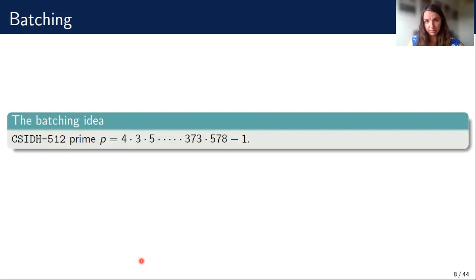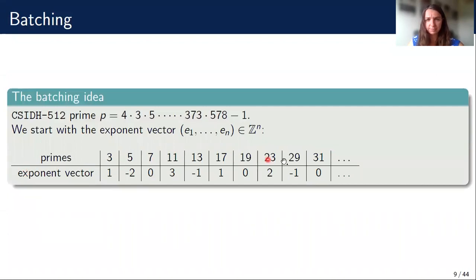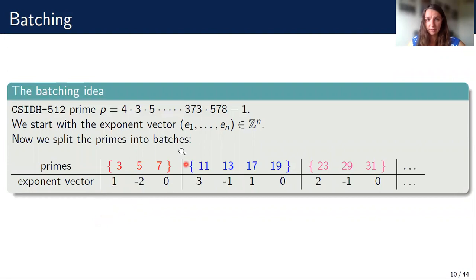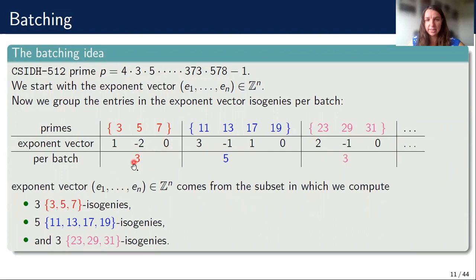Now I'll explain how we change the key space in CTIDE. For concreteness, we take the CTIDE 512 prime. For every prime, there is a group element, and we can look at the corresponding entry in the exponent vector. Then we batch these primes together — we pick any splitting of the set of primes and consider all primes in a batch together. We notice that this exponent vector is actually in the subset of vectors in which we compute exactly three isogenies for primes in one batch, exactly five isogenies for primes in another batch, and so on.